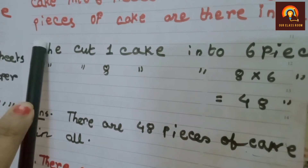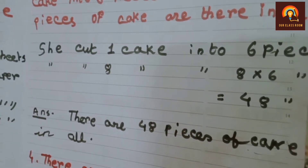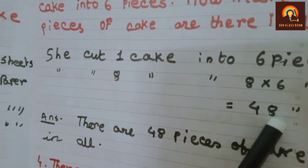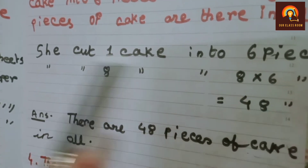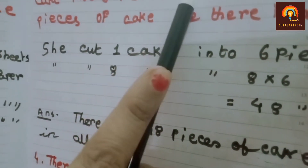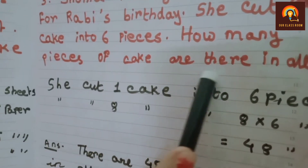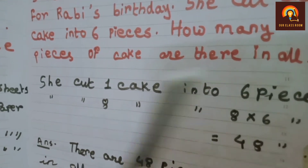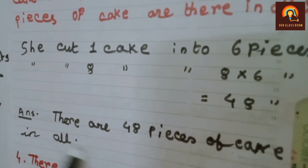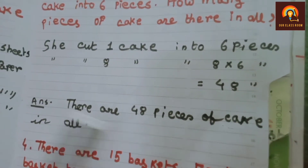1 cake into 6 pieces. 8 cakes is equal to 48 pieces. The answer is the last line. How many pieces of cake are there in all? There are 48 pieces of cake in all. In total, how many pieces are there in all?